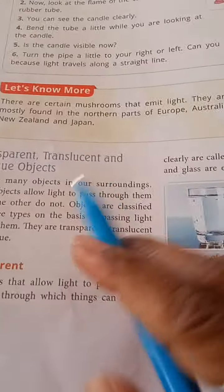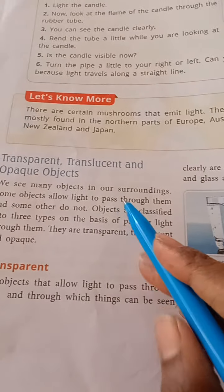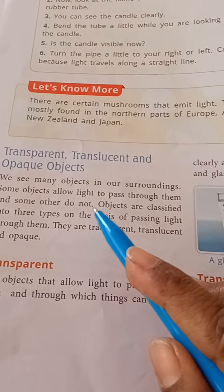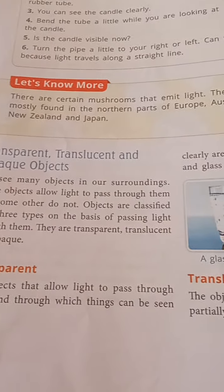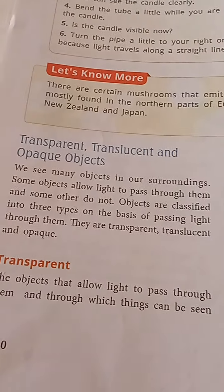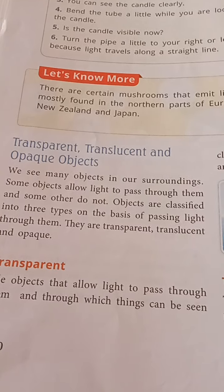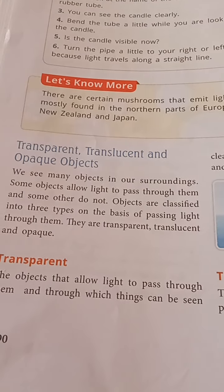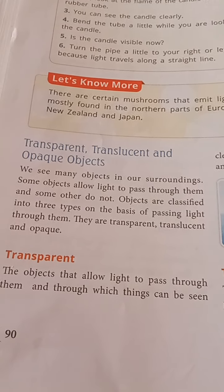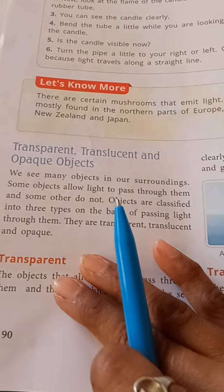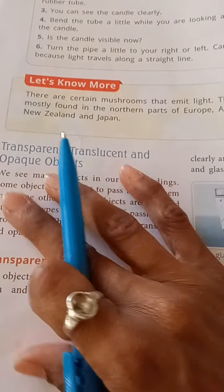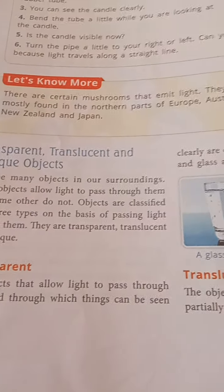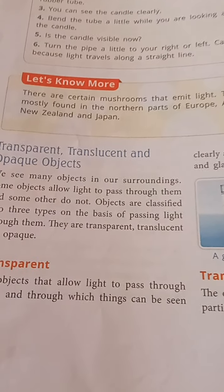The next topic is translucent, transparent, and opaque objects, which we will see in the next period. You have to read this lesson carefully up to that point. Thank you.